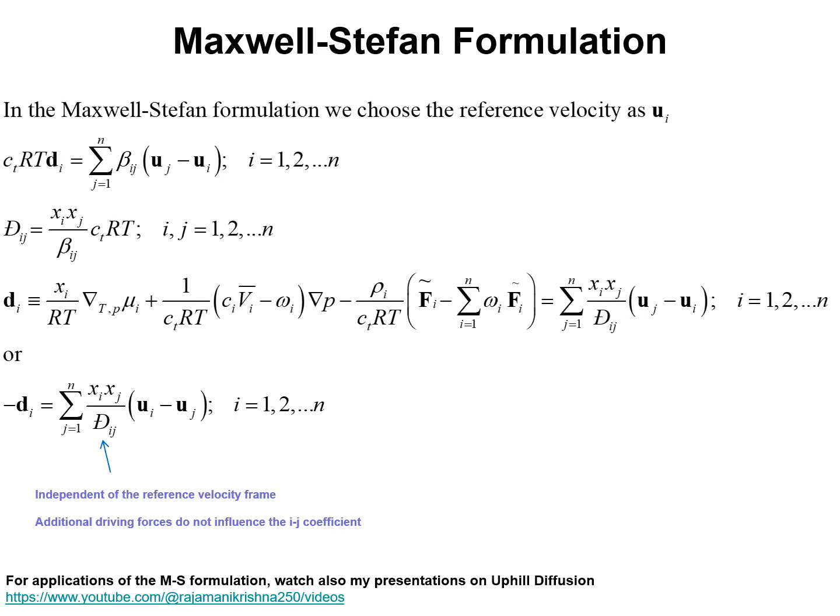In the Maxwell-Stefan formulation, we choose the reference velocity to be the velocity of transport of species i. And the Onsager formulation, therefore, is rewritten in the form: a driving force as a linearly dependent function of the velocity difference between species j and species i. Furthermore, we define a set of paired diffusivities D sub i, j, D has a line through it.